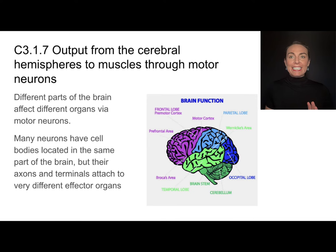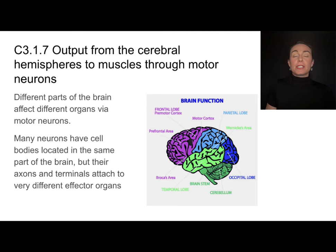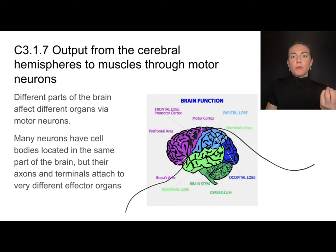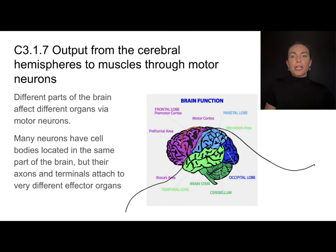Let's back up and take a look at the brain. The brain is made of several distinct regions with different functions, and we're looking specifically at motor neurons. Different parts of the brain affect different organs via these motor neurons. Interestingly, even though motor neurons may have cell bodies located very close to one another, their axons and terminals may go to very different places. If you remove a small portion of the brain, it may be hard to predict the consequence because neurons originating nearby may lead to very different locations.